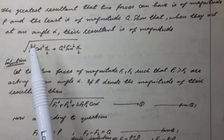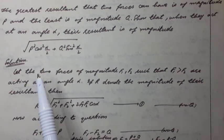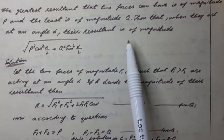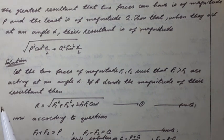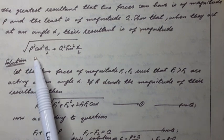So angle alpha is given. So no need to suppose magnitude of the resultant. We suppose it by R and then we prove it.